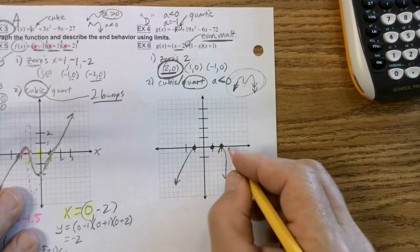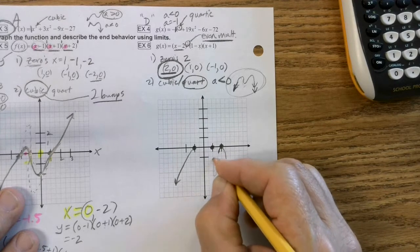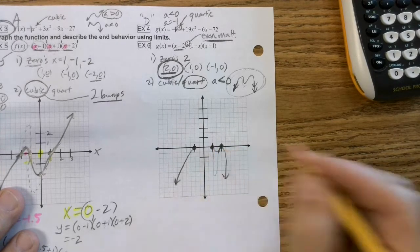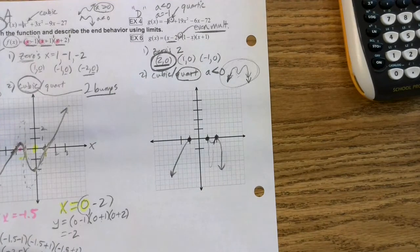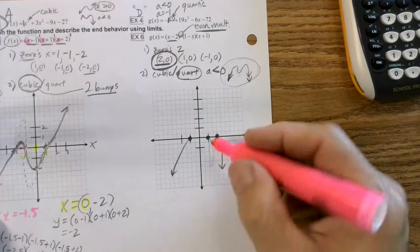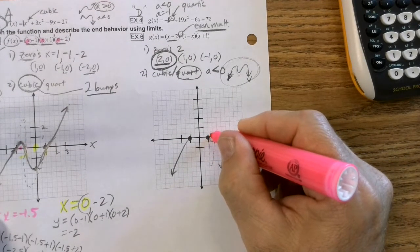Now the question is, in between here, does it go like way down and then up? Does it barely down and go up? We don't know.